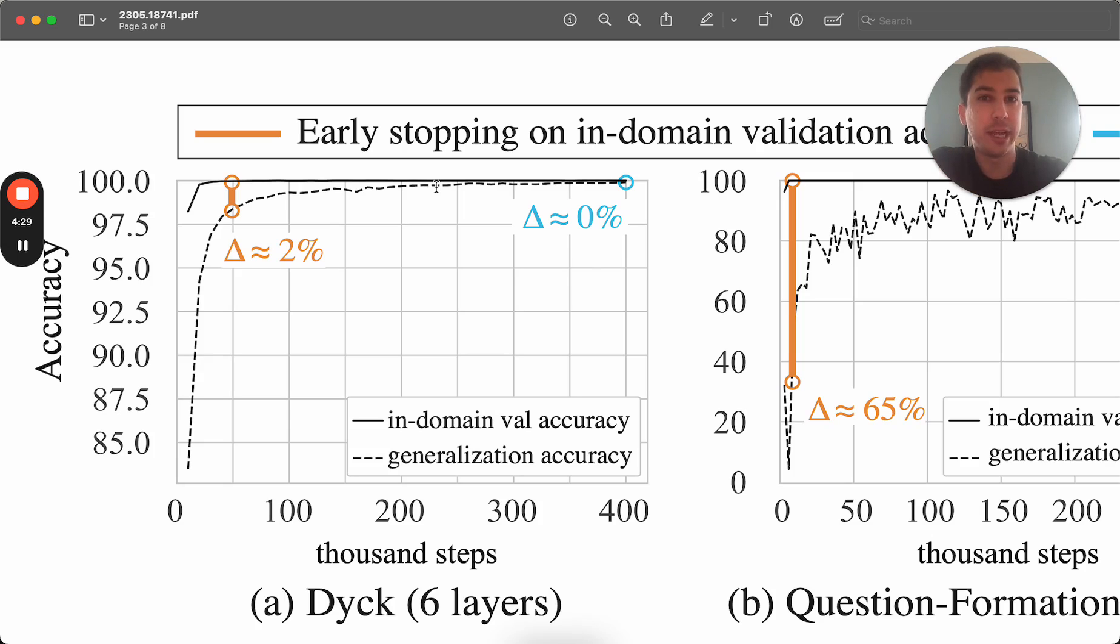And then there's the generalization data set. And this is new to this grokking concept where you have an out-of-domain validation data set that still matches your training data. And so this would be something like if you are training a transformer model on how to read English text, and in particular, you're training it on poetry, let's say. But then you want to see how well does it do on science fiction. It's still English text. It's following the same format and structure, but it's definitely of a different genre.